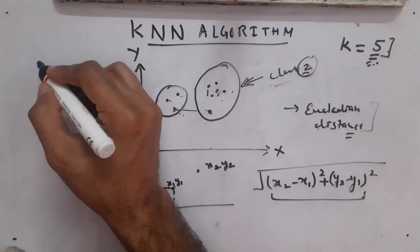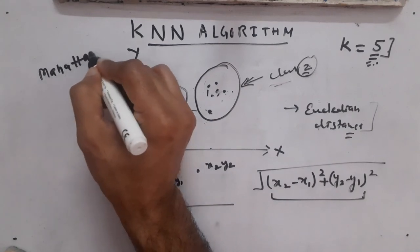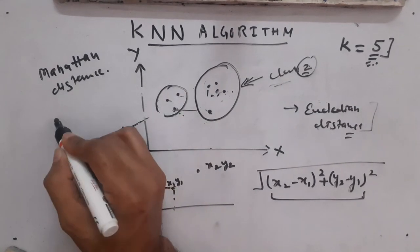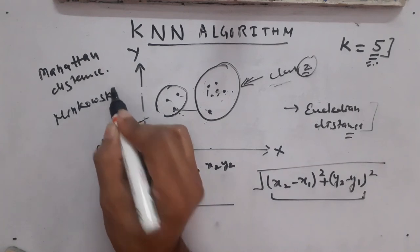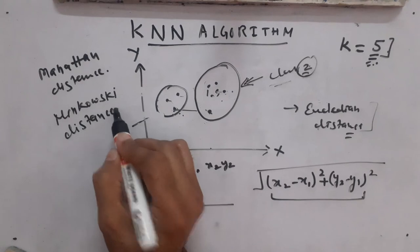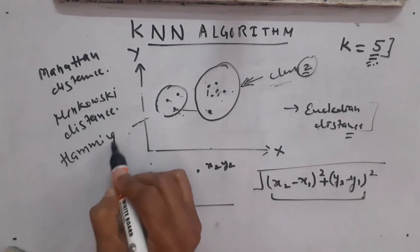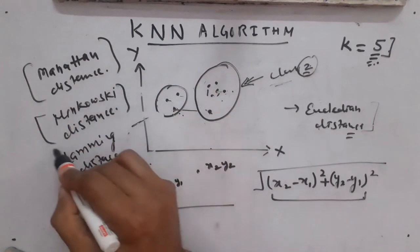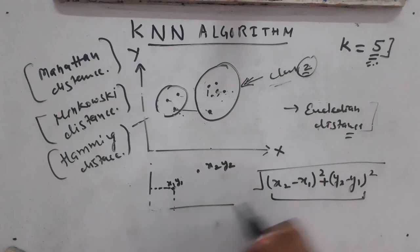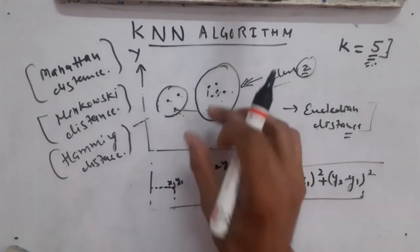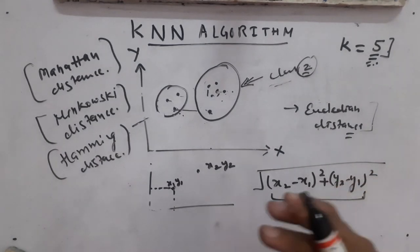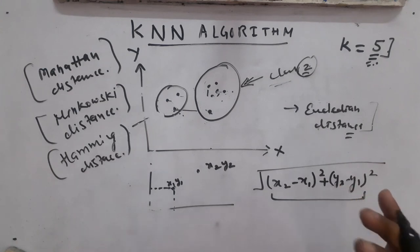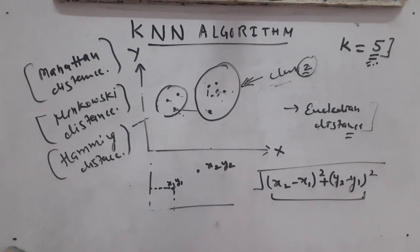There are other distance metrics used in machine learning as well: Manhattan distance, Minkowski distance, Hamming distance, and Euclidean distance. All these distances have their respective formulas. Based on those formulas we calculate the distance and assign the category or class to the new data point. This is how the KNN algorithm works — it's a very simple algorithm and can be learned very easily. That's all for today's whiteboard video. Please subscribe to my channel for more videos on machine learning. Thank you, bye.